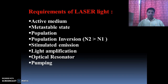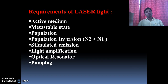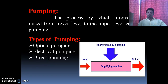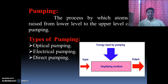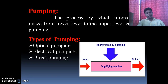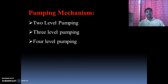There are some requirements for laser: active medium, metastable state, population inversion, stimulated emission, light amplification, optical resonator, and pumping. Pumping is the process by which atoms are raised from the ground state to the higher energy state. There are different types of pumping: optical pumping, which uses a flash lamp and is responsible only for solid lasers, and electrical pumping, which uses gas discharge and is required for gas lasers. There are two-level, three-level, and four-level pumping mechanisms.